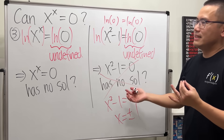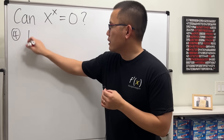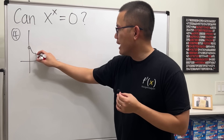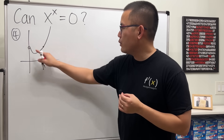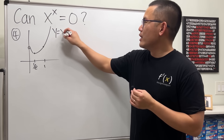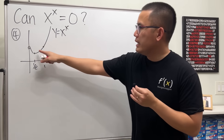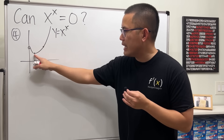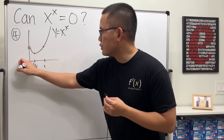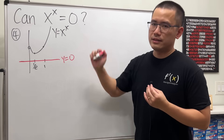Now let's use a graph. Graphing x to the x power, we avoid x equals zero. The graph first goes down and then comes back up. At x equals one, y also equals one, and there is a minimum value at x equals one over e. Even though the base and power are both increasing, x to the x actually decreases in one region before going up. Graphing y equals zero — the horizontal axis — they don't intercept. Based on this, can we conclude it has no solution?